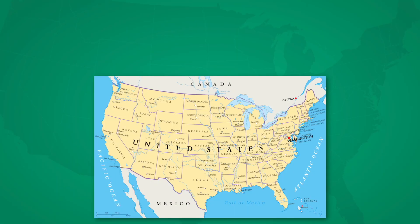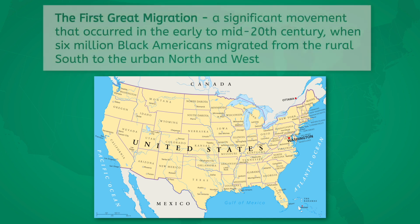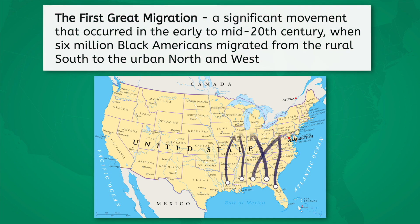Now, let's shift gears to our second case study, the First Great Migration. This was a significant movement that occurred in the early to mid-20th century, when 6 million Black Americans migrated from the rural South to the urban North and West.